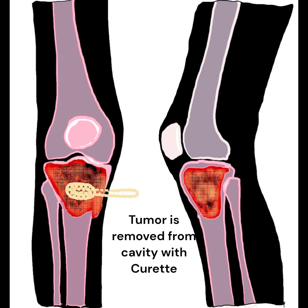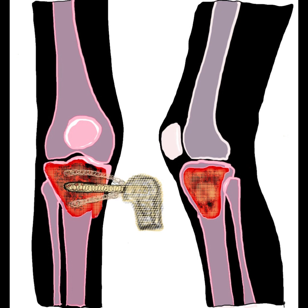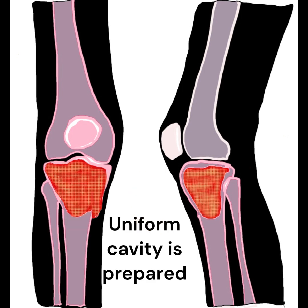Extended curettage aims to reduce the risk of recurrence by using adjuvant treatments to eradicate microscopic residual tumor cells. A high-speed burr is used to further scrape and smooth the walls of the cavity. Substances like phenol, liquid nitrogen, or hydrogen peroxide may be applied to the cavity to kill any remaining tumor cells. Thermal adjuvants including cauterization are also applied to destroy residual cells.